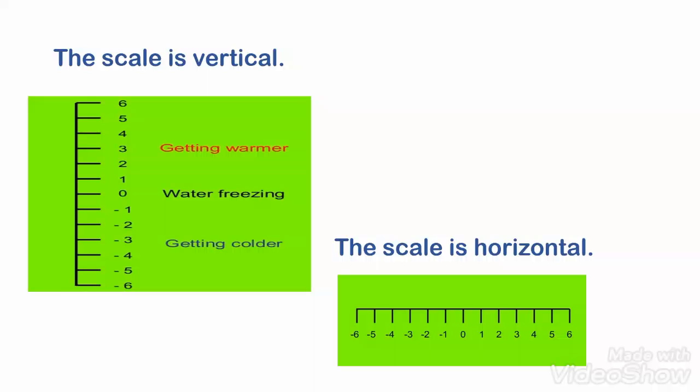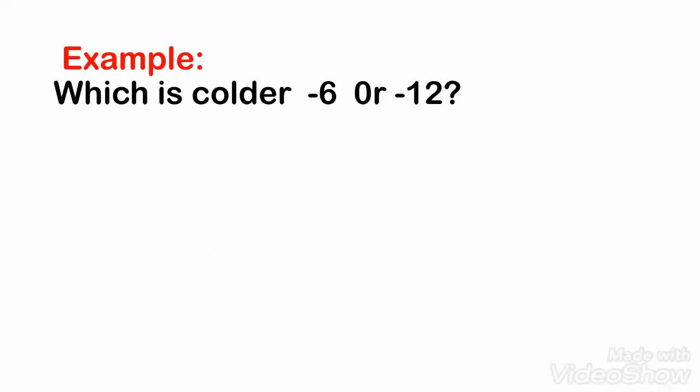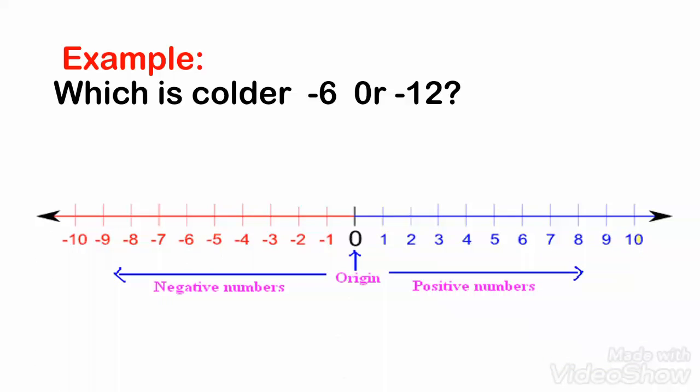The number line helps you to put integers in order. For example, which is colder, negative 6 or negative 12? Negative 12 is colder or smaller. Why?